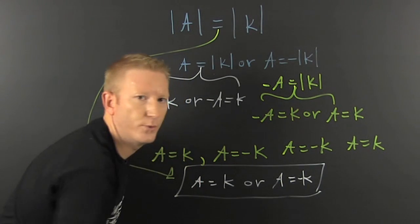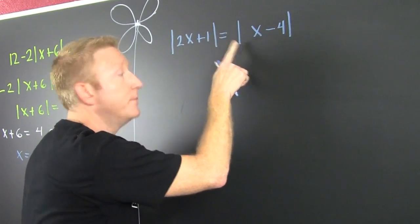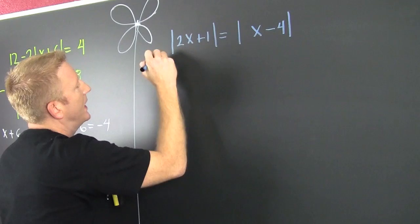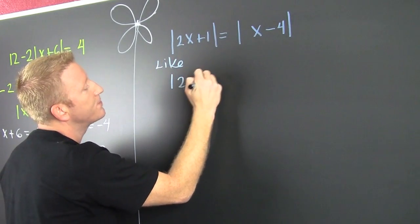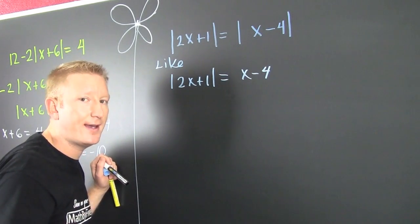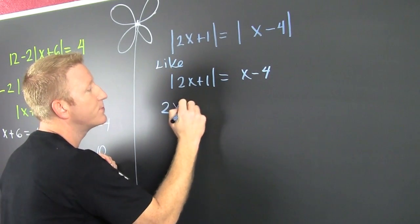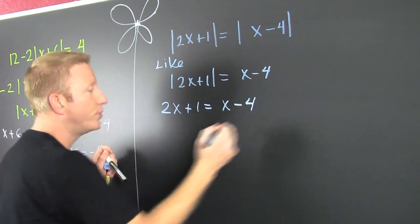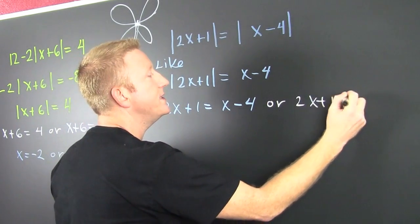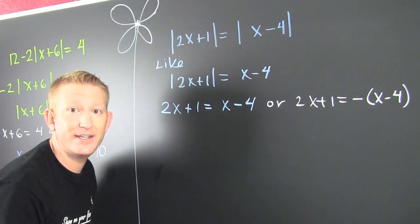So you mean to tell me I just pretend like that one absolute value is not there? Yes — pretend like that absolute value is not there. So then it's like saying the absolute value of 2x plus 1 is equal to x minus 4. We just showed you it's going to be okay. So then I break it up into its two cases: one where 2x plus 1 equals x minus 4, or 2x plus 1 equals minus x minus 4. I need to negate that entire side.